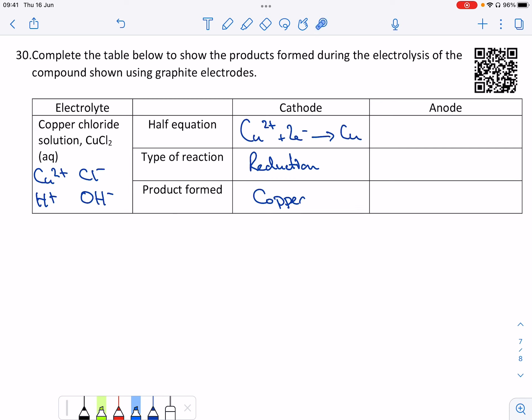At the anode, we have a different rule. Here are the two anions. The rule at the anode is that the simplest will react first. This has got one part, this has got two parts. So the chloride ion is going to react first.